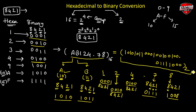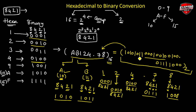As you can see in the example, we have a very long number in the binary number system, while its hexadecimal equivalent uses far fewer digits. That's why we use hexadecimal for long calculations, while computers use binary internally. That's it for today's video — in the next video we will discuss how to convert binary number system into hexadecimal. Thank you.